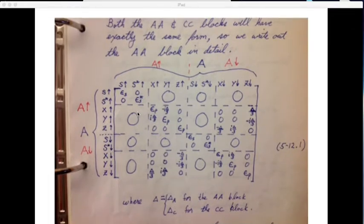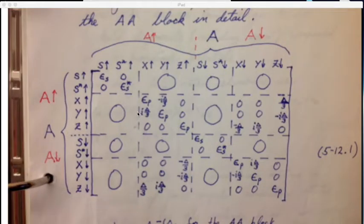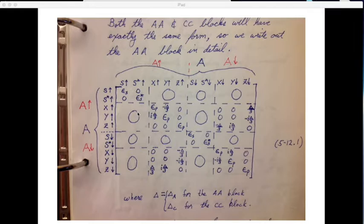This is what they look like in our original basis, in terms of X, Y, and Z. Before we did all this work, this is the AA block — just the A-atom coupling to itself. Down the diagonal, if you just look at the diagonal elements, that's what we had before — this epsilon S.